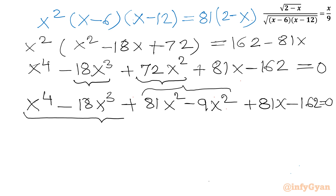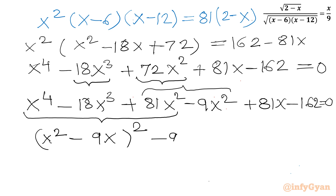Observing the terms, I notice that x to the power 4 minus 18x cubed plus 81x squared forms a perfect square: (x squared minus 9x) whole squared. So I split the polynomial as (x squared minus 9x) squared minus 9(x squared minus 9x) minus 162 equals 0.